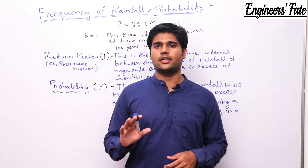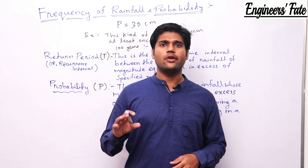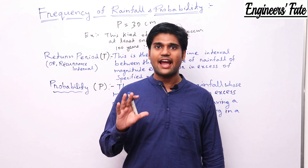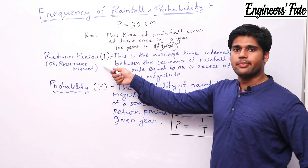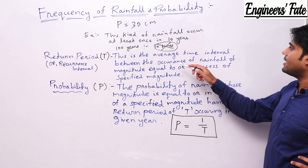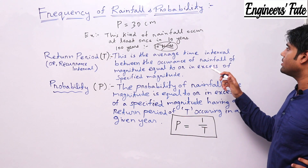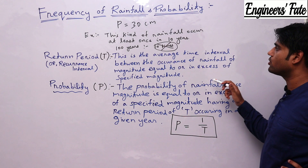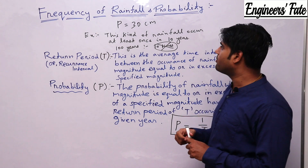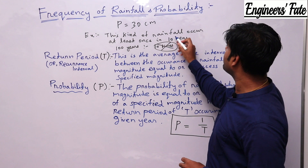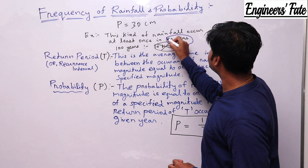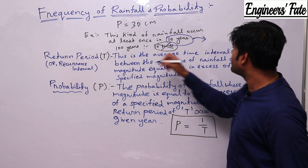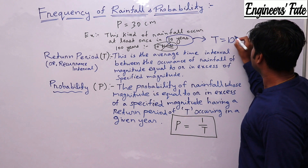So let's discuss the important terms — just remember what I tell you to remember; this is a small but important topic. What is return period? Return period means the average time interval between the occurrence of rainfall of magnitude equal to or in excess of a specified magnitude. From our example, this rainfall occurs at least once in 10 years, so that 10 years is the return period, denoted as T. So T equals 10.